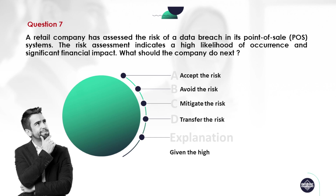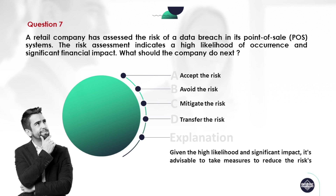Given the high likelihood and significant impact, it's advisable to take measures to reduce the risk's impact or likelihood. Hence, the correct answer is Option C: mitigate the risk.